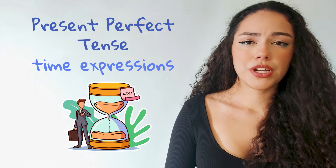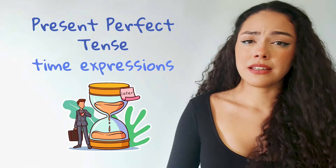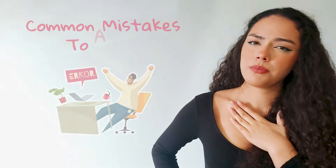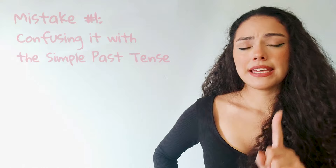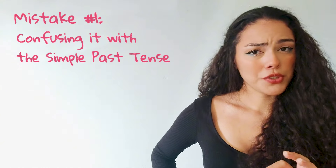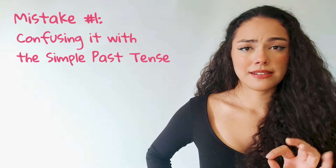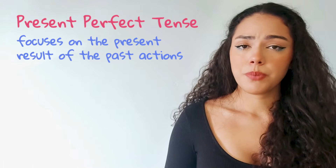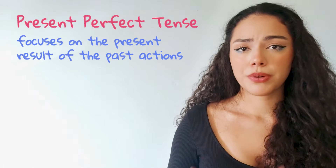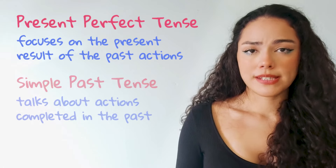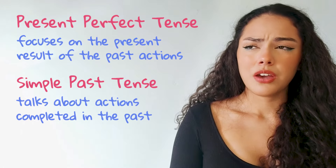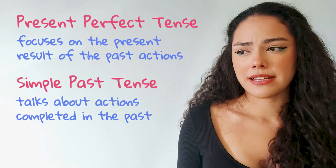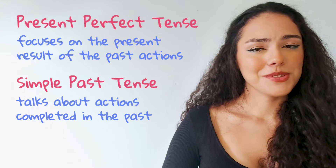If you see these time expressions, your sentence might be in the present perfect tense. Before we wrap up, let's talk about some common mistakes to avoid when using present perfect tense. Mistake number one: confusing it with the simple past tense. Remember, the present perfect tense focuses on the present result of past actions, while simple past tense talks about actions completed in the past. We talked about past tense in our previous videos — you can check it out if you want.